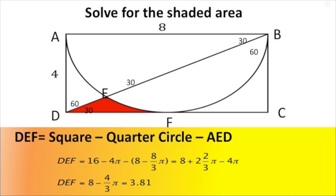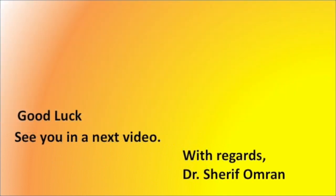So the result is eight minus 4π/3. If you don't have a calculator, π is approximately 3.14, so the answer is approximately four — but the correct answer is 3.81. Finally, I wish you good luck and see you in the next video.